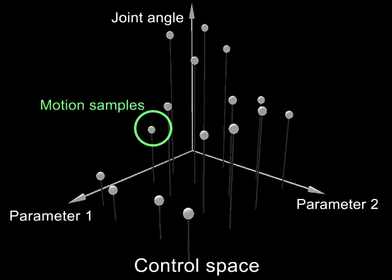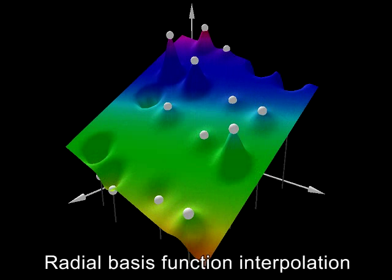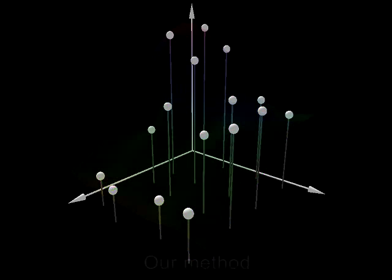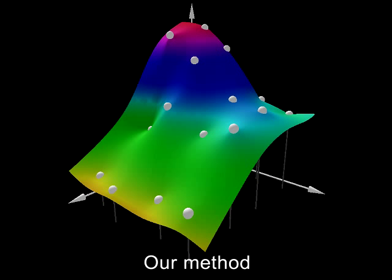Motion samples are usually parameterized in multivariate space and are interpolated by a smoothing technique. For example, radial basis functions ensure continuous distribution, but not a smooth shape. However, our new method ensures smoother and more accurate distribution because of the statistical analysis of motion variations.